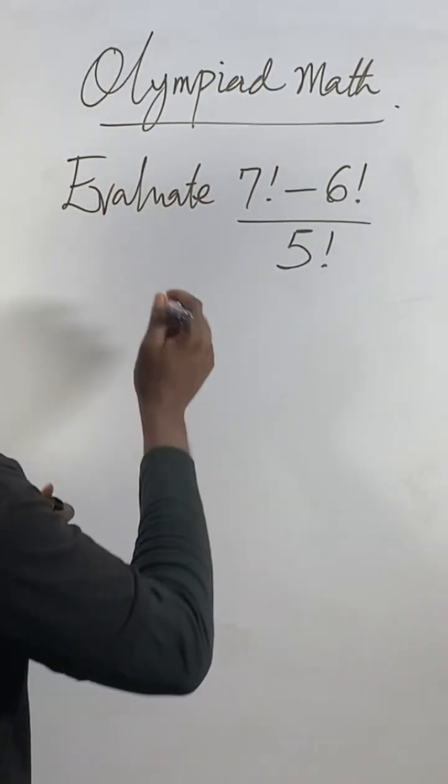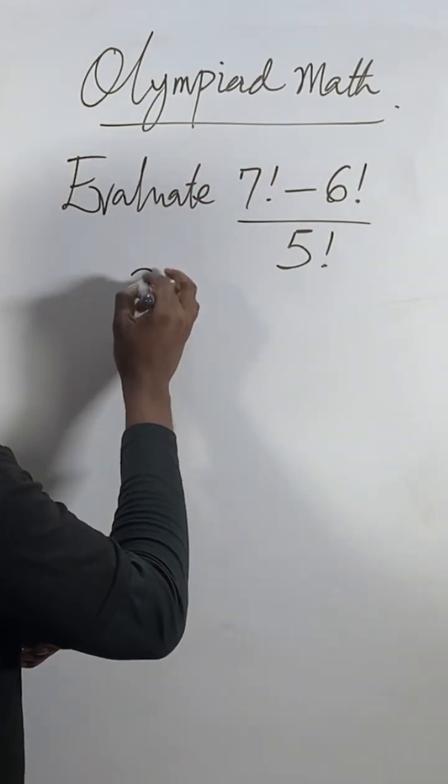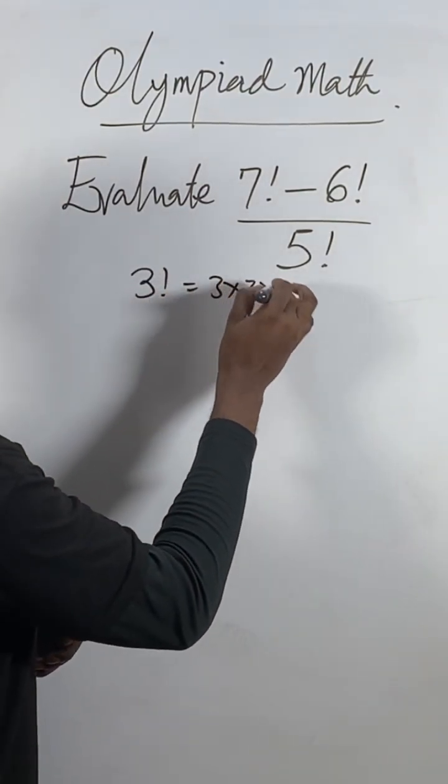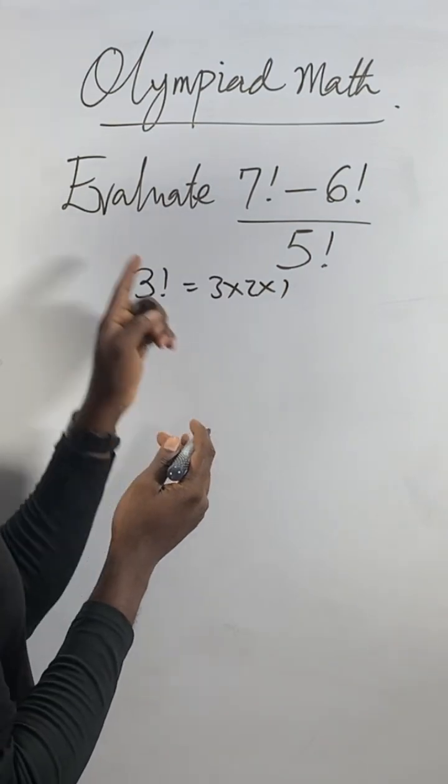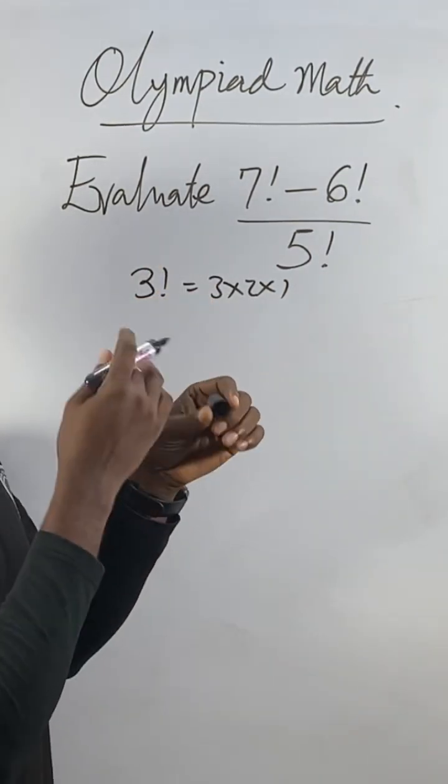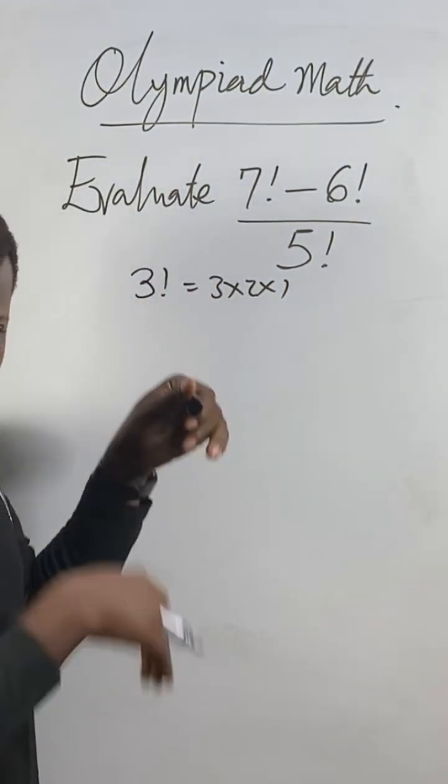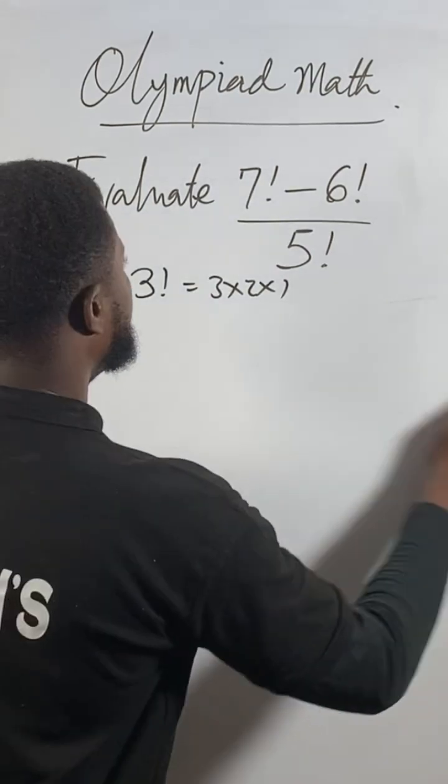Remember factorials? In mathematics, if you get 3 factorial, it means 3 times 2 times 1. If you get 9 factorial, it's 9 times 8 times 7, and so on. You start with that number and multiply going down.